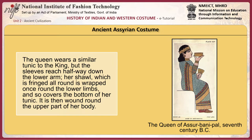In this picture, the queen wears a similar tunic to the king, but the sleeves reach halfway down the lower arm. Her shawl, which is fringed all around, is wrapped once around the lower limbs, covering the bottom of her tunic, and then wound round the upper part of her body.